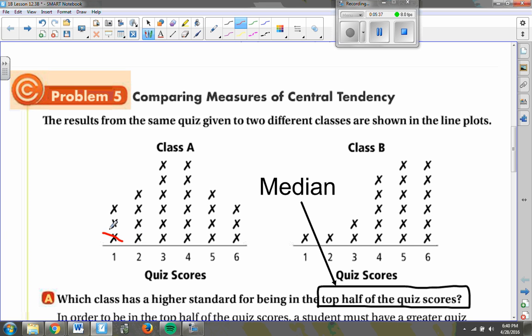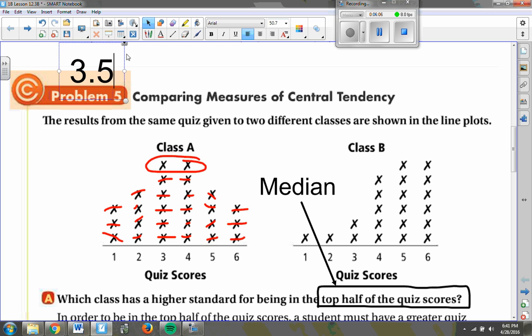So obviously in class A, I can cancel out these three ones with these three sixes. I can cancel out these twos with these fives, and then I can start canceling out the threes with the fours. And I end up right here with these two values. So these two values, three and four, are right in the middle of my class. So I'll find the median by finding the average of three and four, which of course is 3.5.